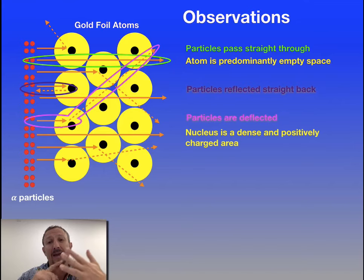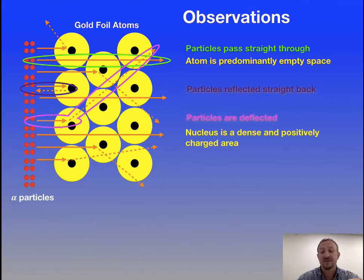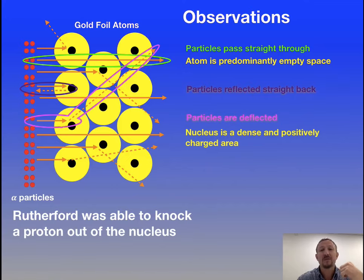So to recap, the atom is predominantly space. It's got a dense nucleus, which is positively charged. Rutherford was also able to knock out a proton out of this nucleus and identify the proton.